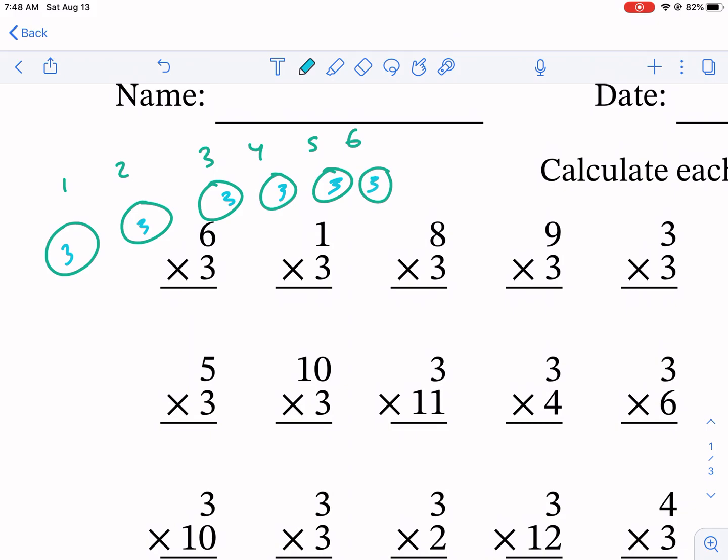And the total, we write beneath this line right here. So if we're talking about 6 groups of 3, that's 3, 6, 9, 12, 15, 18, and that's going to be our answer.